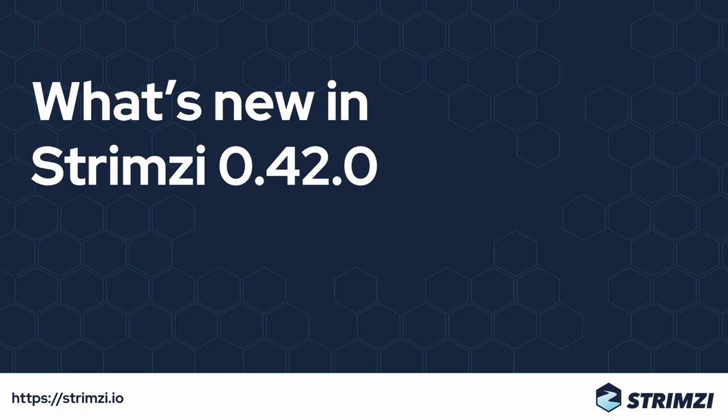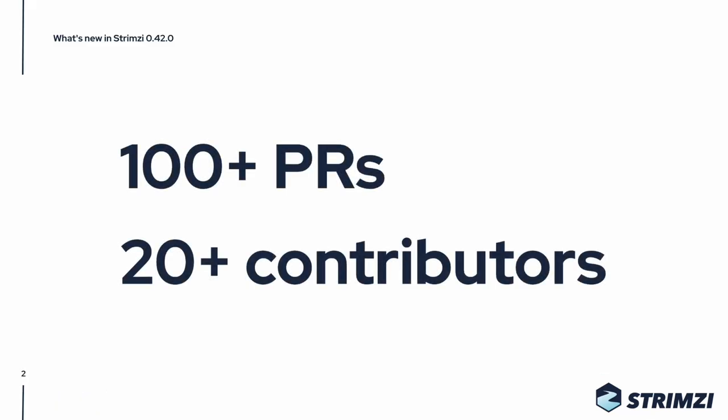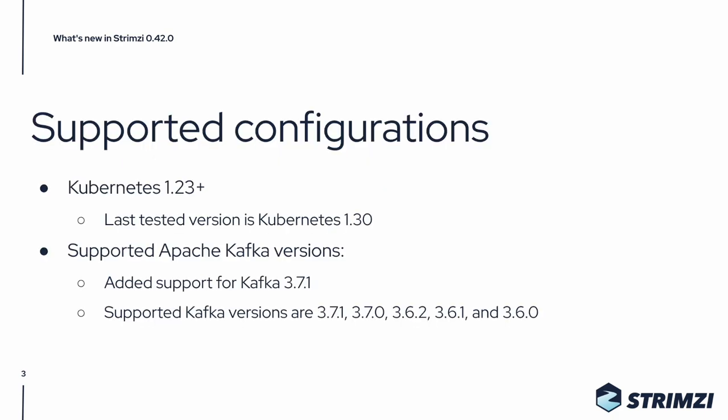We have a new Strimzi release, 0.42, and as always, we have for you a short video going through the main changes. This release has over 100 changes from over 20 different contributors. It supports Kubernetes 1.23 and newer, and the last Kubernetes version this release was tested with was Kubernetes 1.30.